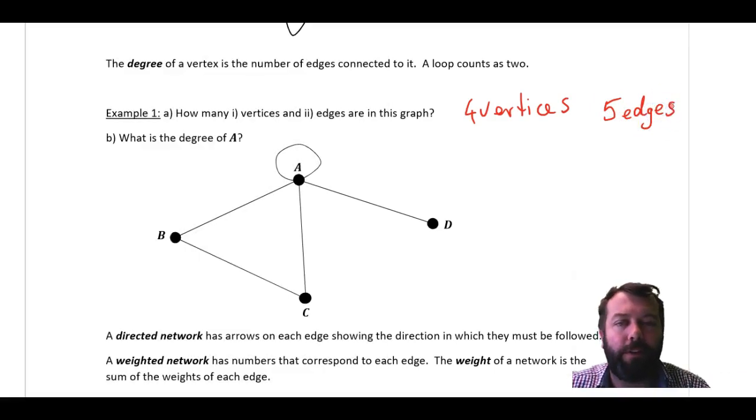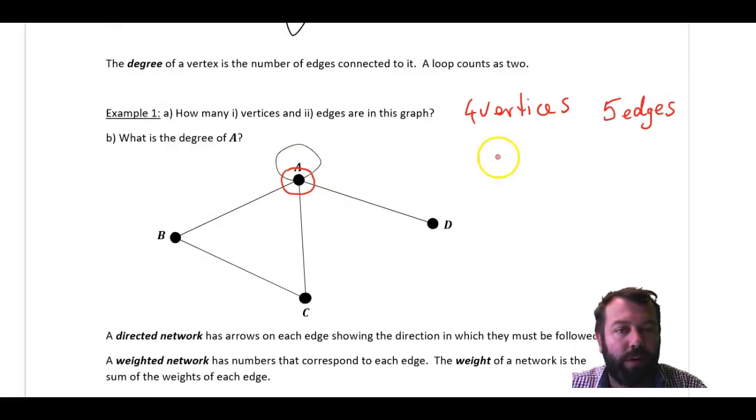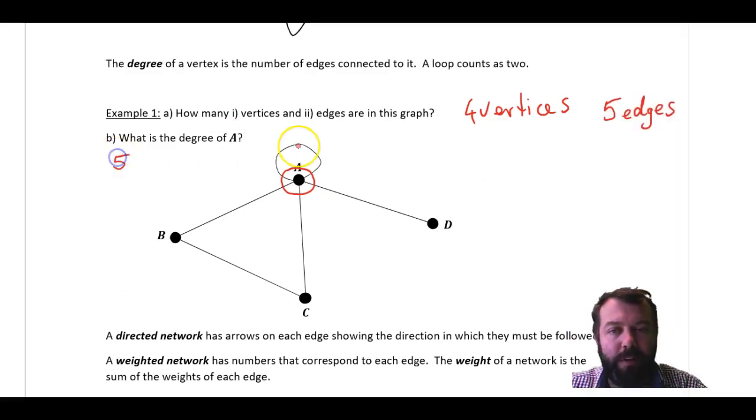Okay, four vertices, five edges. Now what's the degree of A? One way to understand this is, if I sort of draw a circle around here and cut everything, how many edges do I cut? One, two, three, four, five. So it has a degree of five. The degree of a vertex is how many edges come out of there. So B has a degree of two. C has a degree of two. D has a degree of one. But A there has a degree of five.